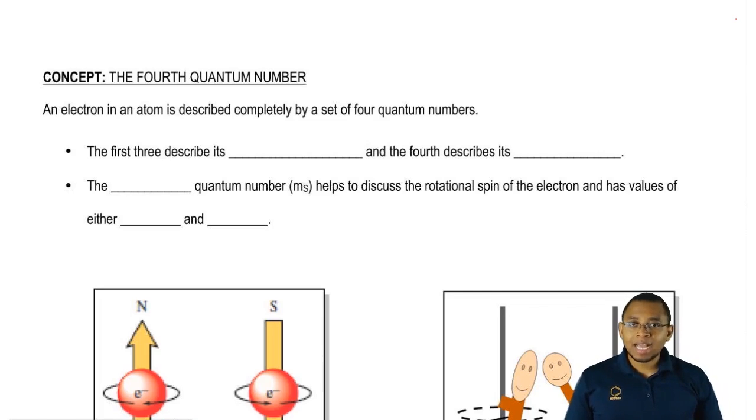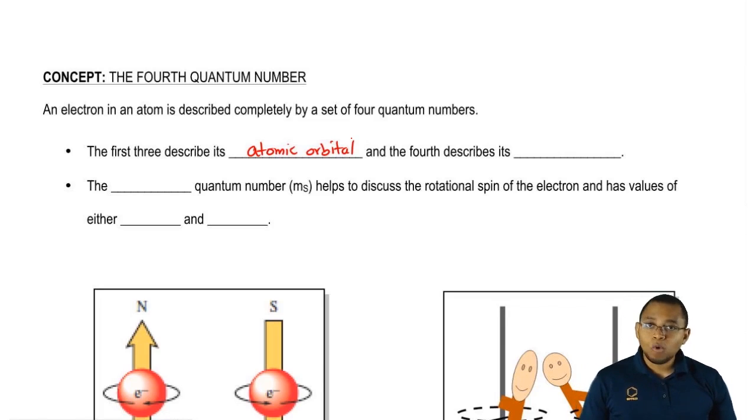Up to this point, we've only looked at three of the quantum numbers. We say that the first three describes its atomic orbital. So the first three quantum numbers we talked about, our principal quantum number, our angular momentum quantum number, and our magnetic quantum number only describe the atomic orbital. And the fourth describes the spin of the electron.